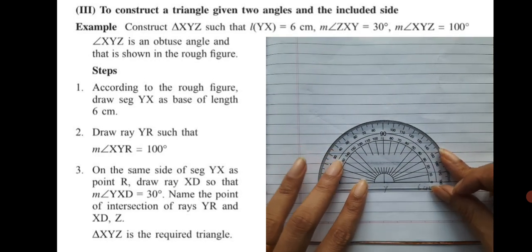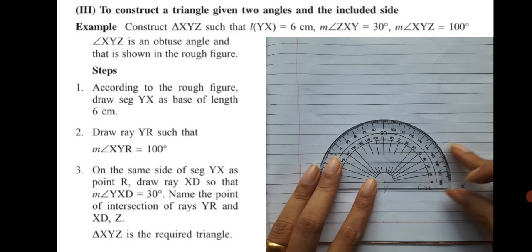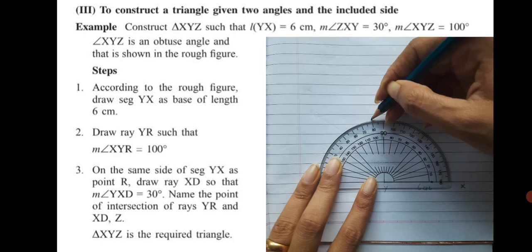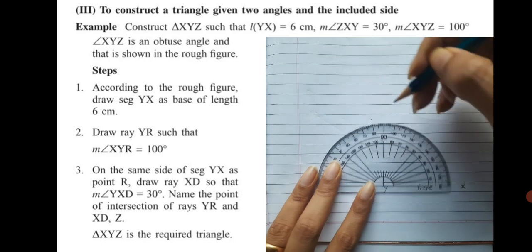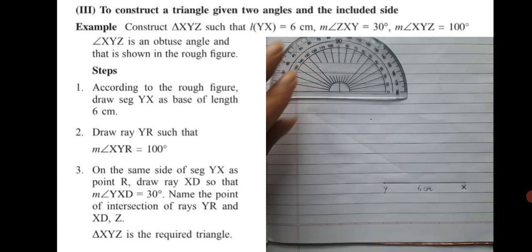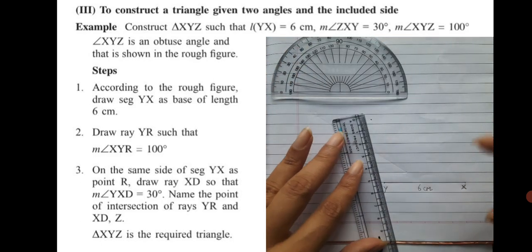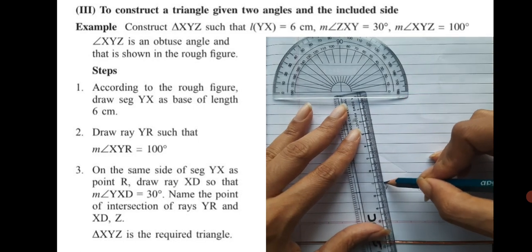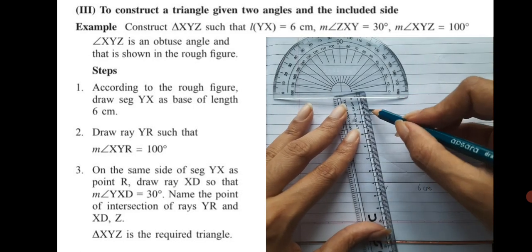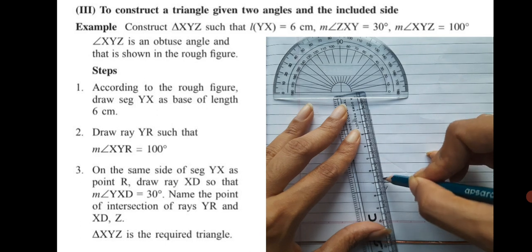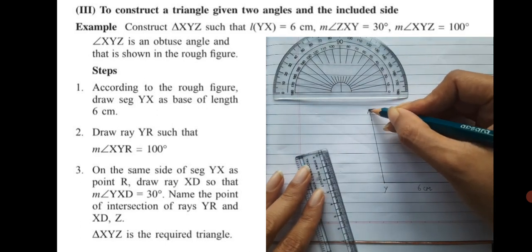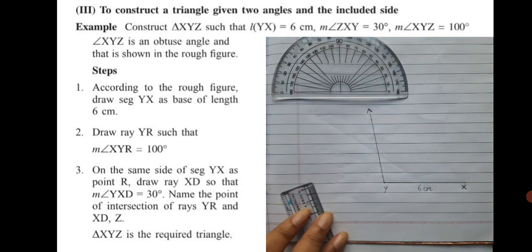The second step is to draw ray YR such that the measure of angle XYR is equal to 100 degree. As in the rough figure, angle Y is 100 degree, so with the help of a protractor we draw an obtuse angle here. 100 is an obtuse angle, so accordingly draw an obtuse angle which measures 100 degree.